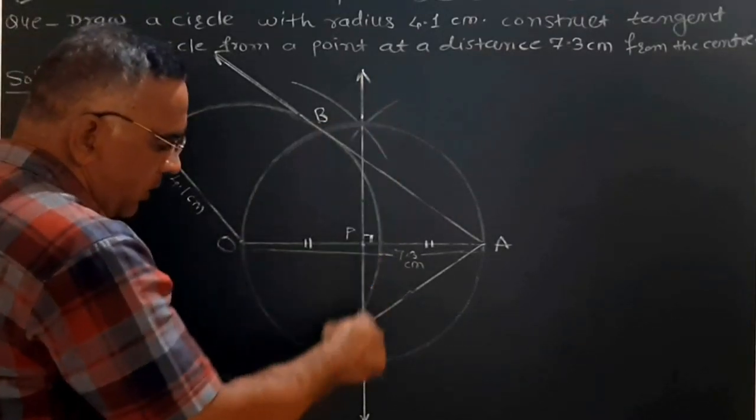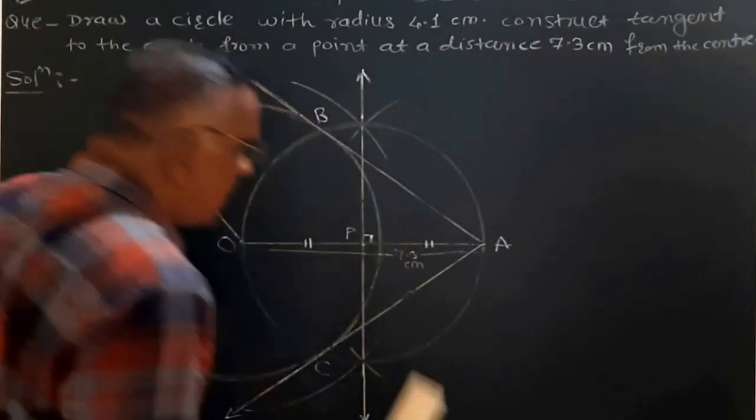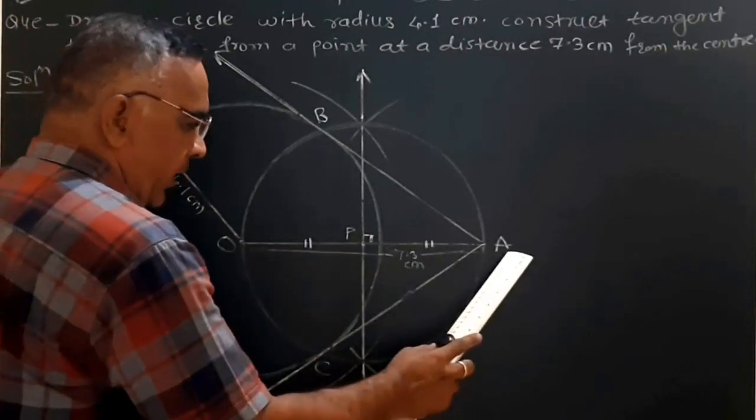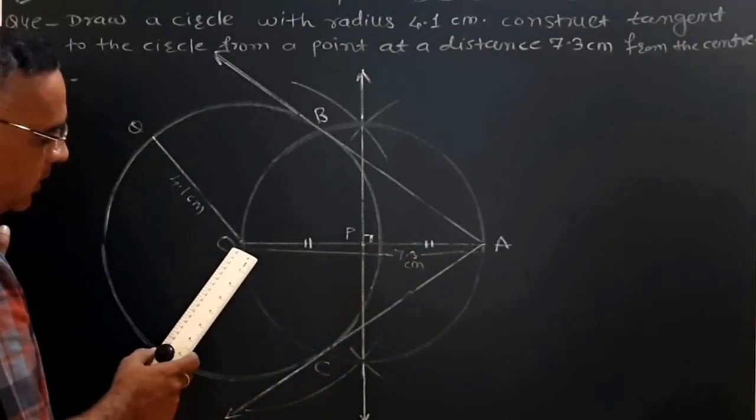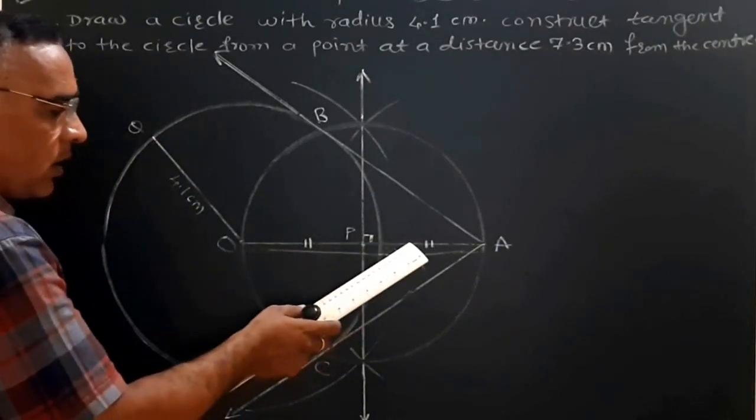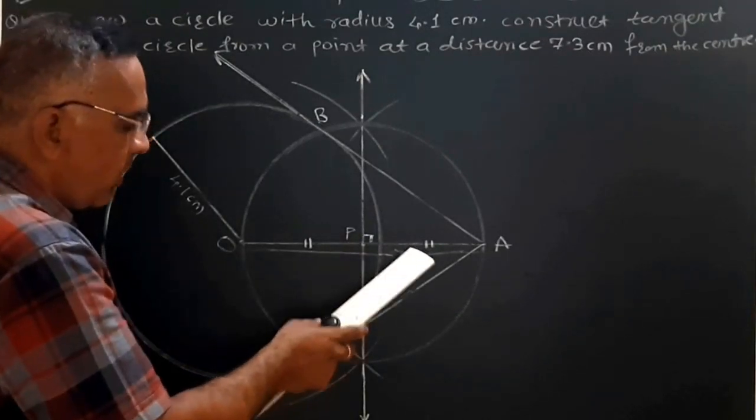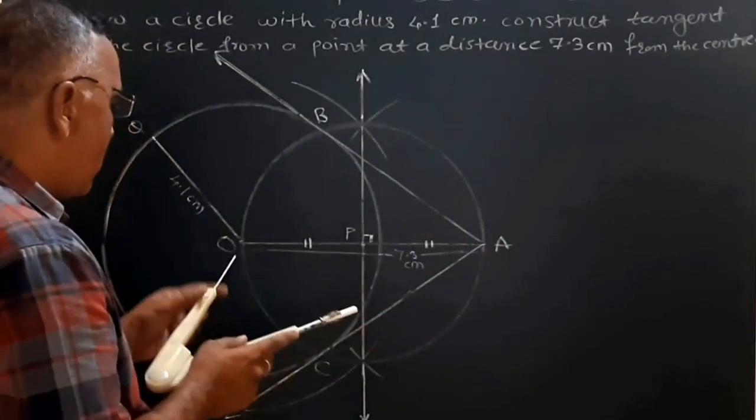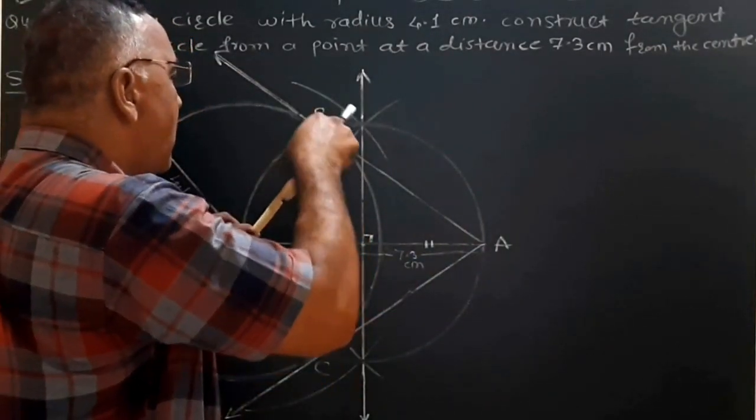To draw the perpendicular bisector on segment OA, first take a maximum distance in a compass and then draw an arc in this way.